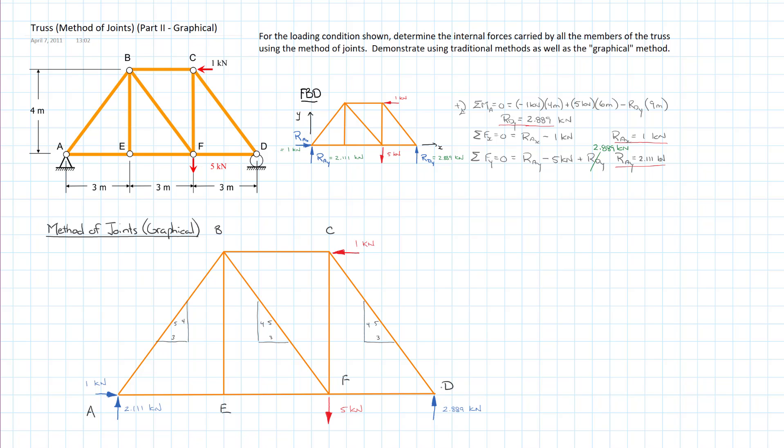We're going to start at joint A and I am going to apply the sum of the forces in the Y direction. I'm choosing the Y direction because I have a component. I have two members coming in, one is strictly horizontal so it can only provide a horizontal force, that's member AE. The member AB is on an angle so it has a vertical component.